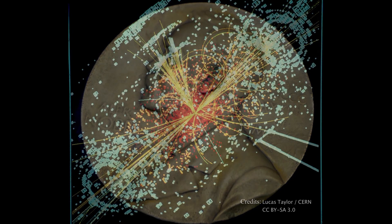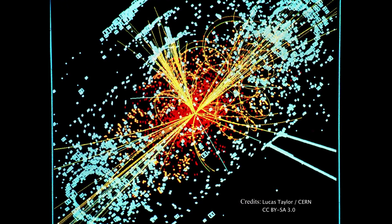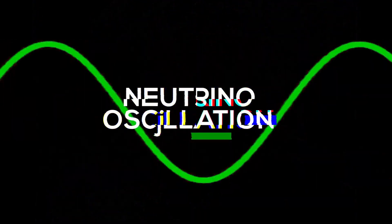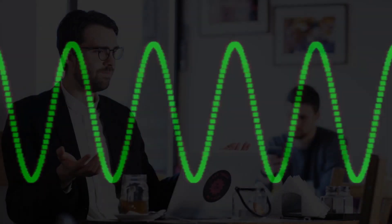But what makes neutrinos special is not only their capability of being so elusive, but also their unique ability of turning into another type of neutrino. This phenomenon is known as neutrino oscillation. What does it mean? Stick with me and I will tell you in a few moments.